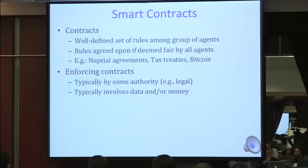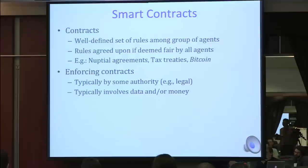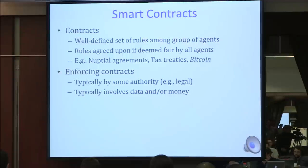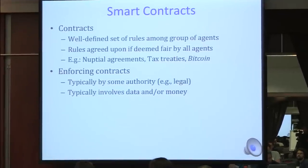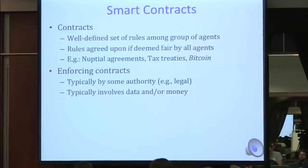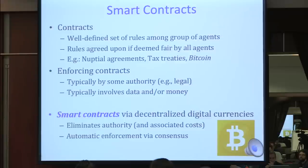Let me begin by taking a very abstract view of contracts. These are basically a well-defined set of rules among a group of agents. The agents join the contract only if they think the rules are fair. Viewed this way, most things in everyday life are just contracts. More philosophically, Bitcoin itself is a contract among miners and users of the system. There's no value in a contract unless the rules are enforced—typically done by some kind of authority. We'll consider smart contracts as contracts whose rules are enforced automatically via consensus, without relying on any authority.